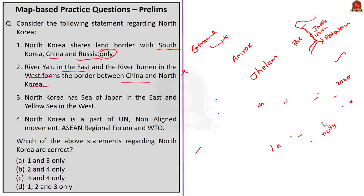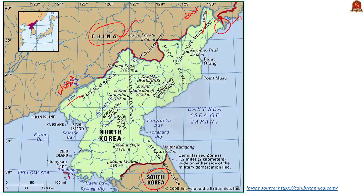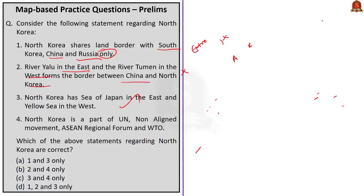Now, let us move on to the third statement. It is given that North Korea has sea of Japan in the east and yellow sea in the west. This statement is correct — the sea of Japan is in the east and yellow sea is in the west of North Korea.